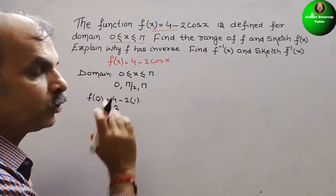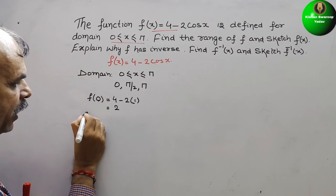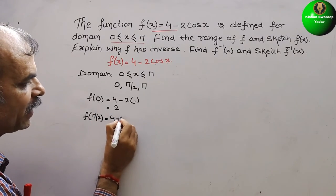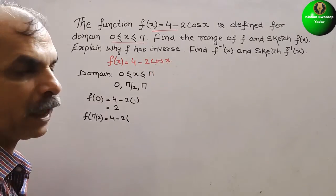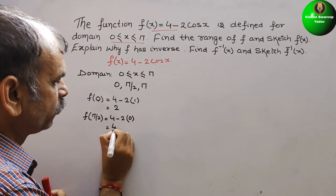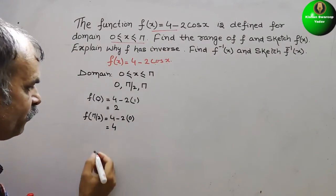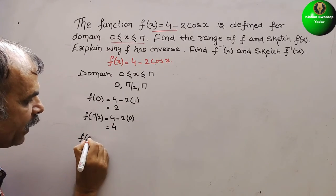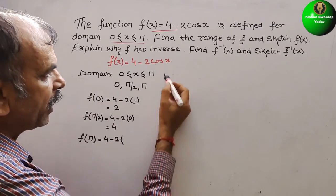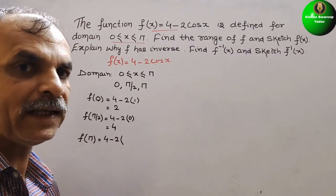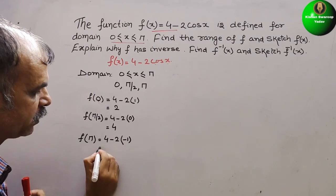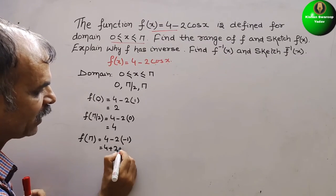Next, we take x = π/2: f(π/2) = 4 - 2·cos(π/2) = 4 - 2·0 = 4. Next, we take x = π: f(π) = 4 - 2·cos(π) = 4 - 2·(-1) = 4 + 2 = 6.